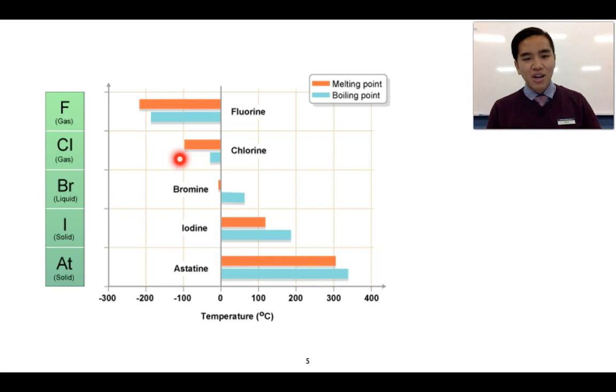And regardless of whether we look at melting and boiling points, we can see that there is this increasing trend. So the boiling point and melting point increase as you go from fluorine to astatine.